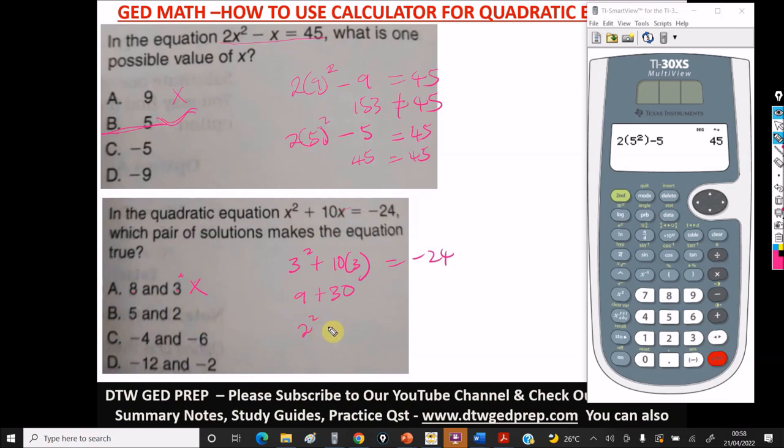Let's use 2 here for option B. So we have 2² + 10(2). This is 4 plus 20, four plus 20, this is positive 24. And a positive 24 is not equal to negative 24, so we can't use this. So this is wrong.